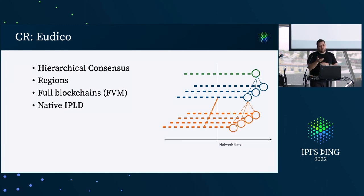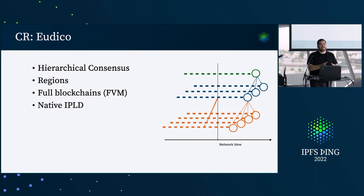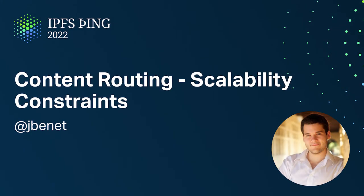Another useful thing that comes from Utico is that it'll have the full blockchain, the FVM, once that lands. It's native IPLD, so all the content routing records we're making, all the CIDs and so on — Utico already comes out of the box with all that tooling. Sound good? Great, thank you.